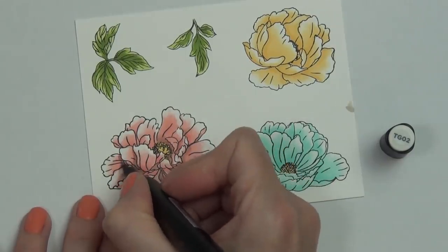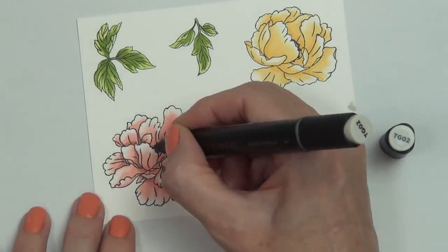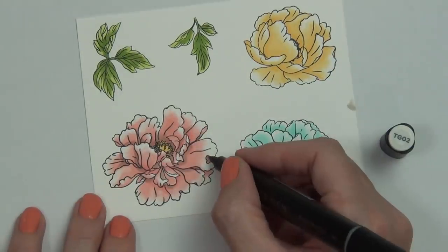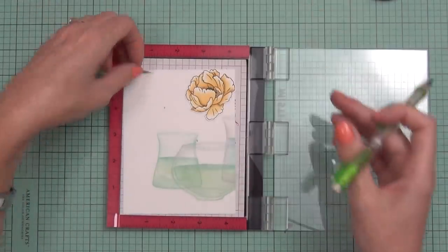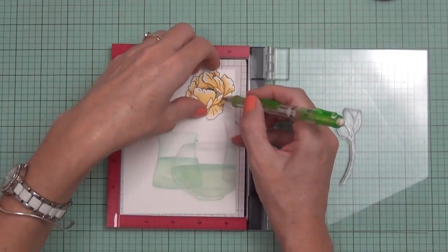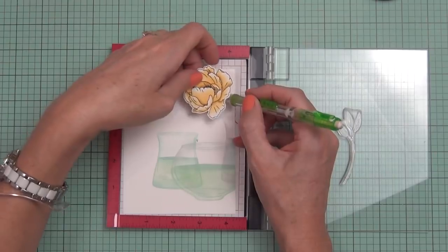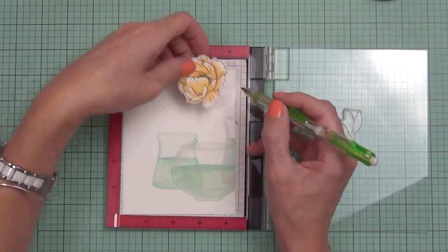The only shading I added was with the gray marker. I came in and just added a touch of shading here and there, and I cut them out with the coordinating dies, which is the same that I did. I forgot to mention that on the vases in the card before I did actually die cut them with the coordinating dies.